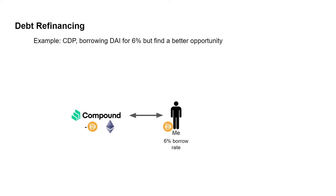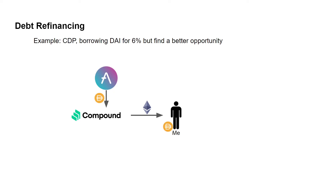The next use case is debt refinancing. Say I've opened a collateralized debt position (CDP) and I'm borrowing DAI at 6% on Compound using ETH as collateral. I find I can borrow DAI for only 3% on another platform. I can't close my Compound position without repaying the DAI, because I'm already using it elsewhere. This is where a flash loan helps: I borrow DAI from Aave via a flash loan, pay back Compound, receive my ETH collateral back, then move to the cheaper platform.